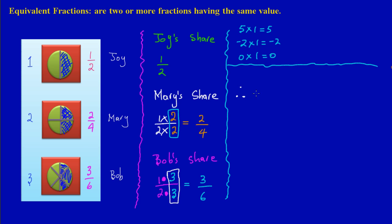Therefore we can state that 1 over 2 is equal to 2 over 4, which is also equal to 3 over 6. All of these numbers have the same value because they are equivalent fractions. Another key thing to note is that when you multiply a fraction — both the numerator and the denominator — by the same number, that process is called building up the fraction. That's an introduction to equivalent fractions. If you still have questions, feel free to post your comments or ask your question. Bye!